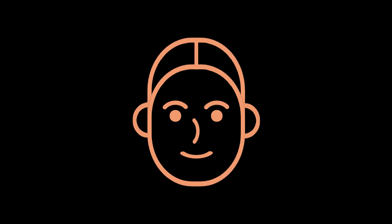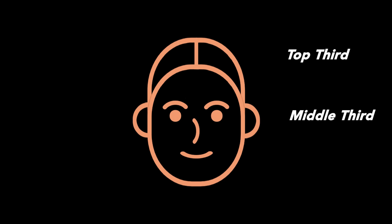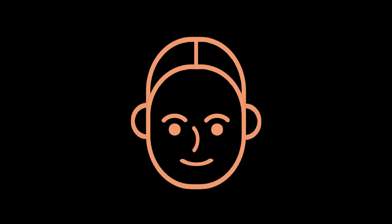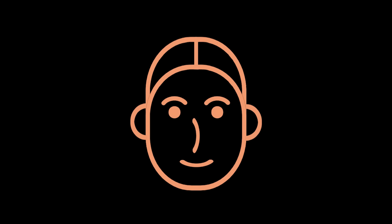The face is divided into three sections: the distance from your hairline to your eyebrows is the top third; the distance from your eyebrows to the tip of your nose is your middle third; and from the tip of your nose to the end of your chin is your lower third. If your top third is the longest section of the face, our eyes are drawn to the forehead area the most. If your middle third is the longest, our eyes are first drawn to the nose area, and so on.